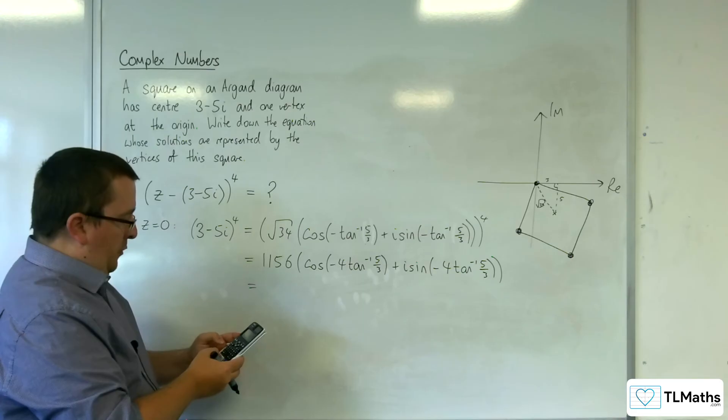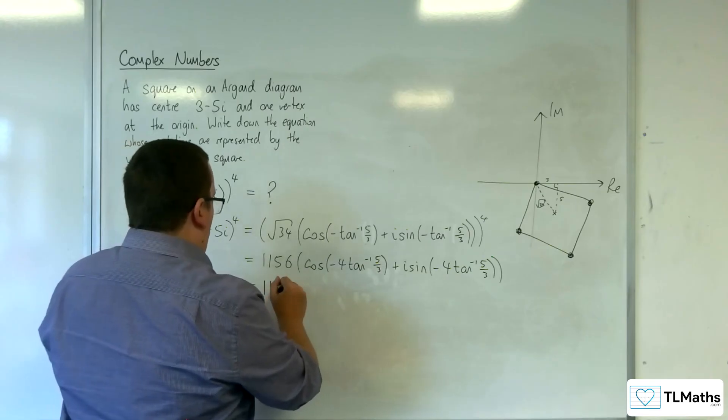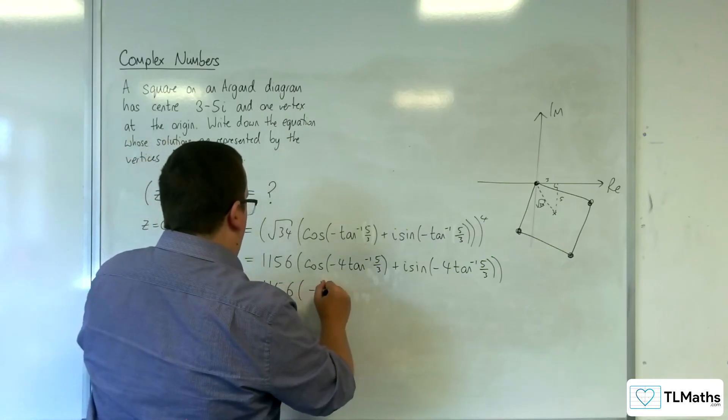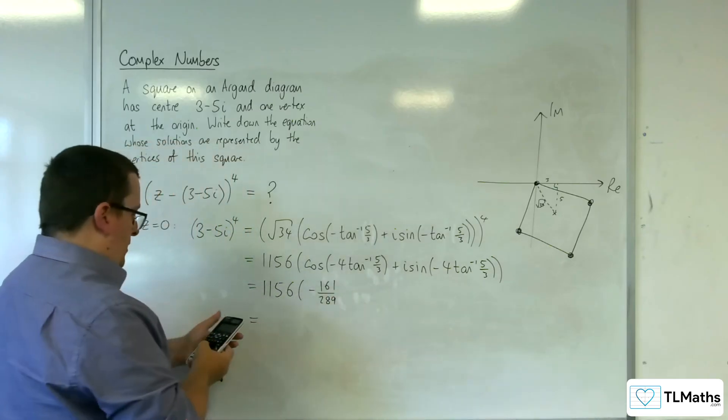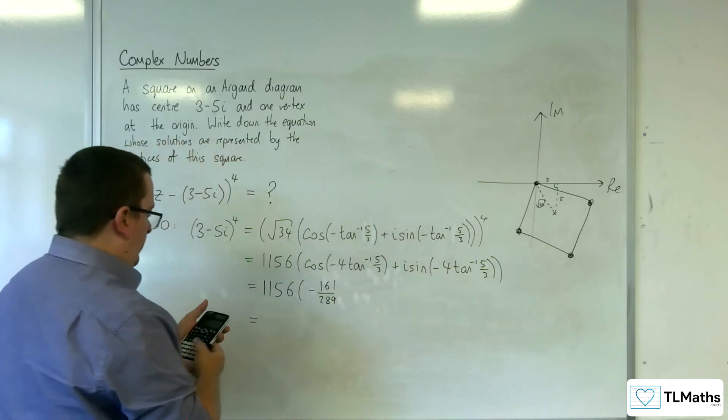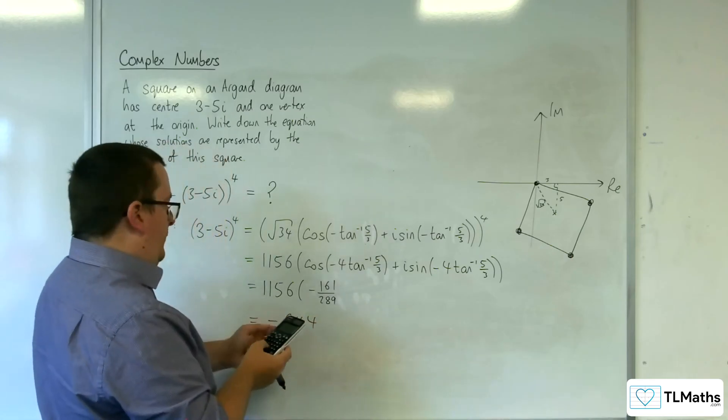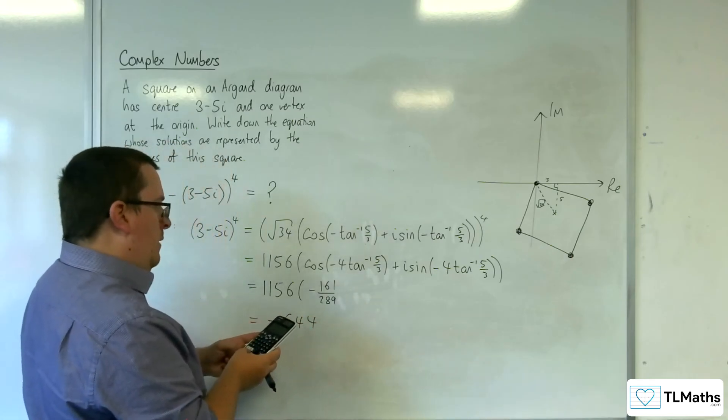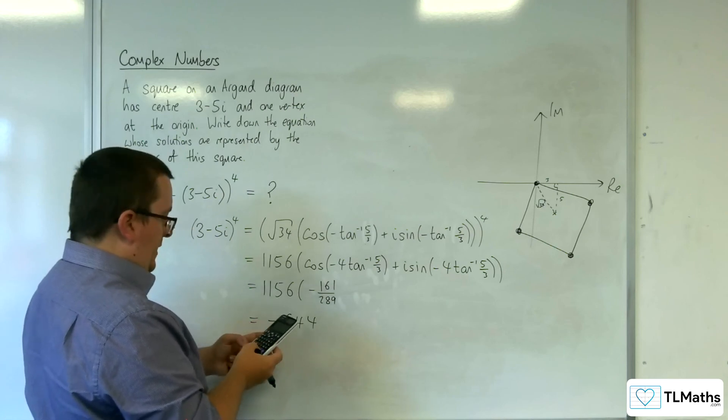So we've got 1156 times, so it's -161/289. Multiplying that by 1156, I'm going to get -644, and then we've got sin(-4tan^(-1)(5/3)).